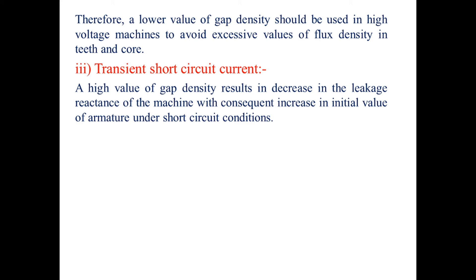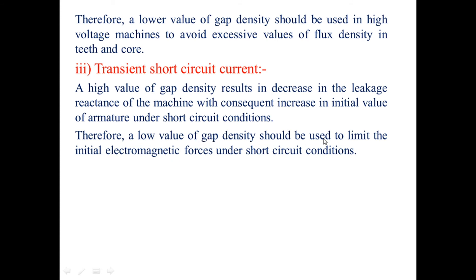The third factor is transient short circuit current. A high value of gap flux density results in decreased leakage reactance, with a consequent increase in the initial armature current under short circuit conditions. Therefore, a lower value of gap density should be used to limit the initial electromagnetic forces under short circuit conditions.